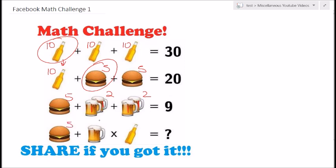We bring that 5 down, and now notice that in the previous equation we had two glasses, but here in the final equation we only have one. So this value is 1. From the first equation we know the bottle is 10. Using PEMDAS, we do the multiplication first: 1 times 10 is 10, and 5 plus 10 is 15.